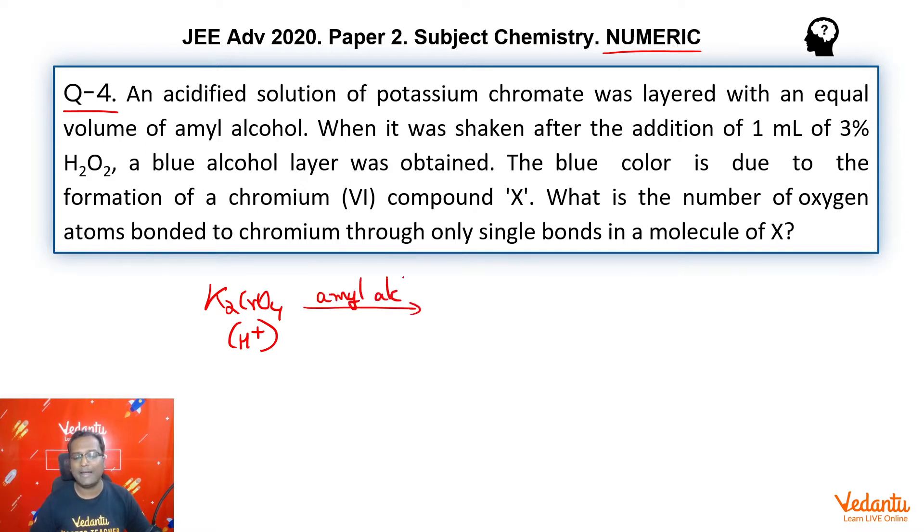Layer with means we will add amyl alcohol very carefully to it. Then he says we further add H2O2, 1 ml 3%, that means dilute H2O2.